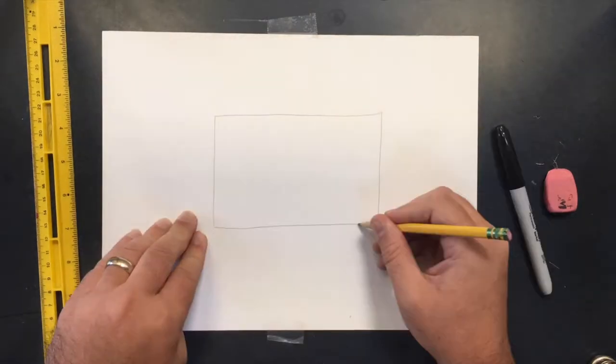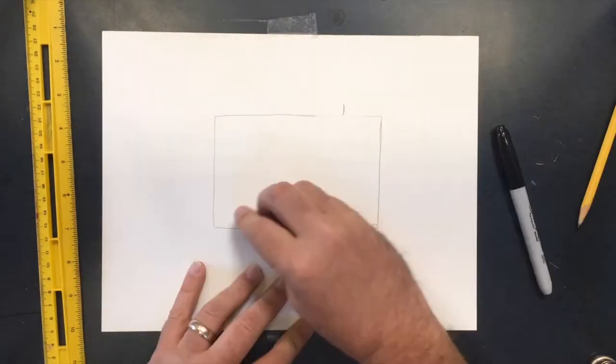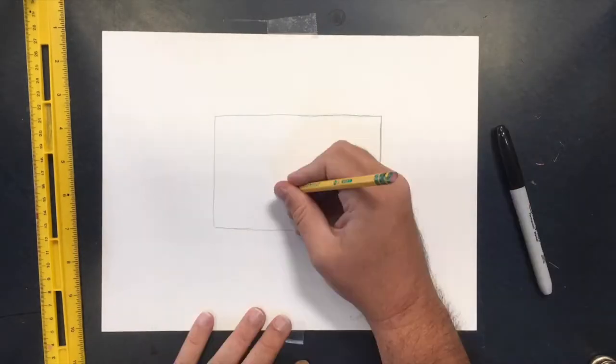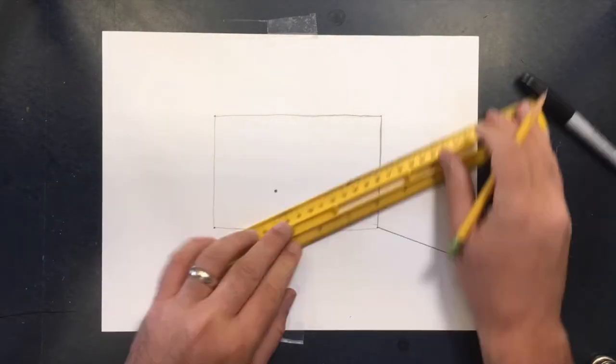To draw a room using one point perspective, you'll start by drawing a rectangle. This will be the back wall. Inside the rectangle make one dot. That's your vanishing point.